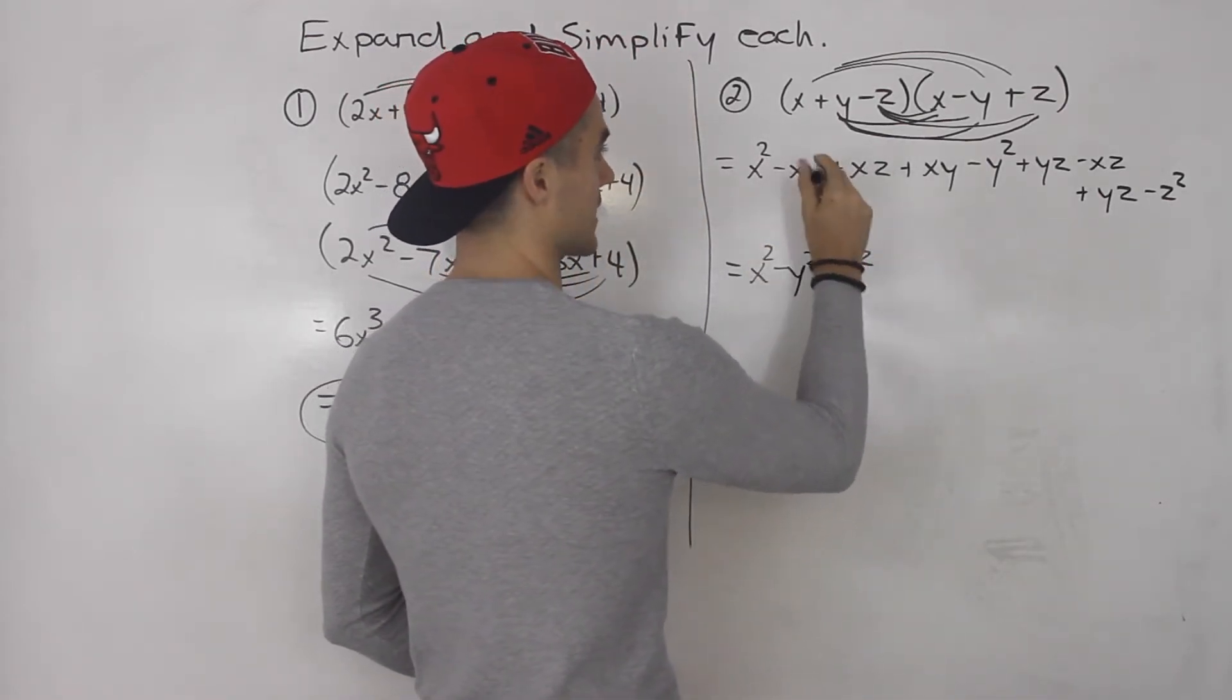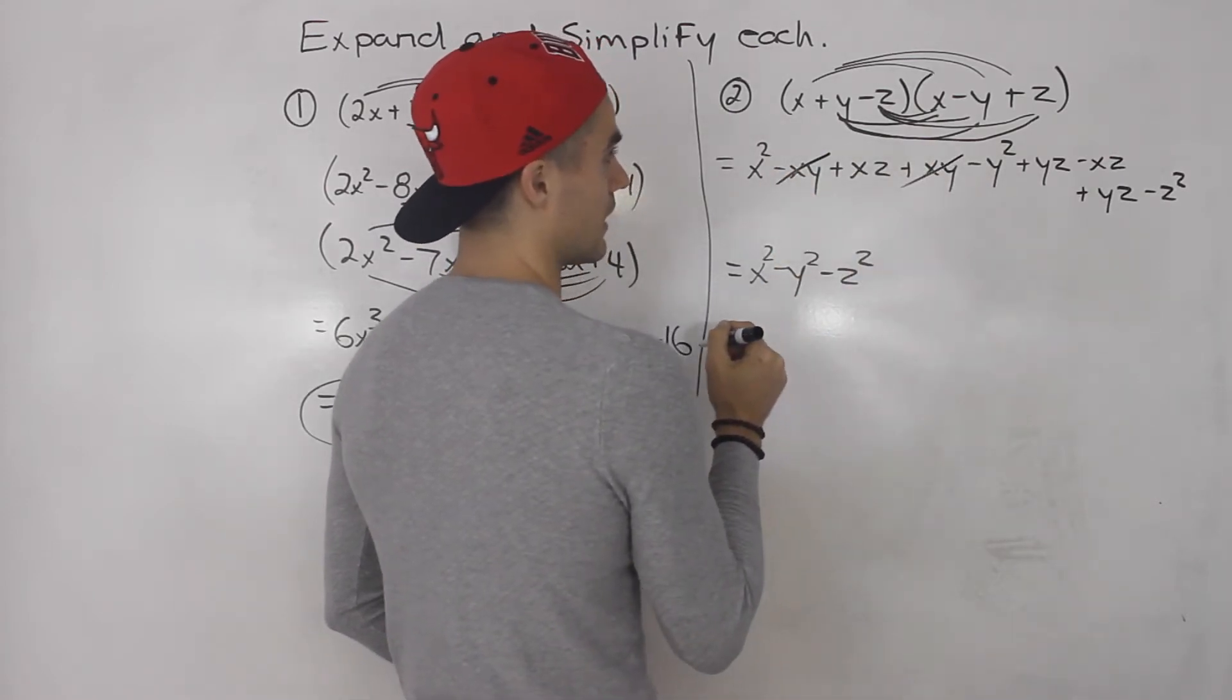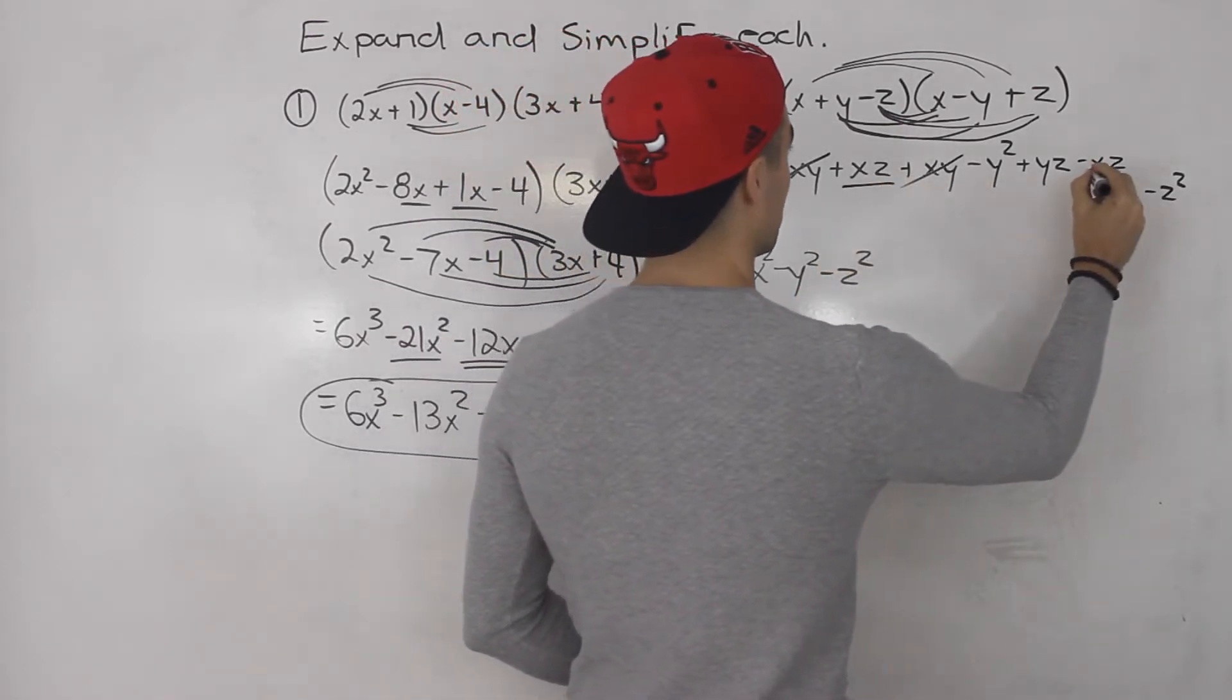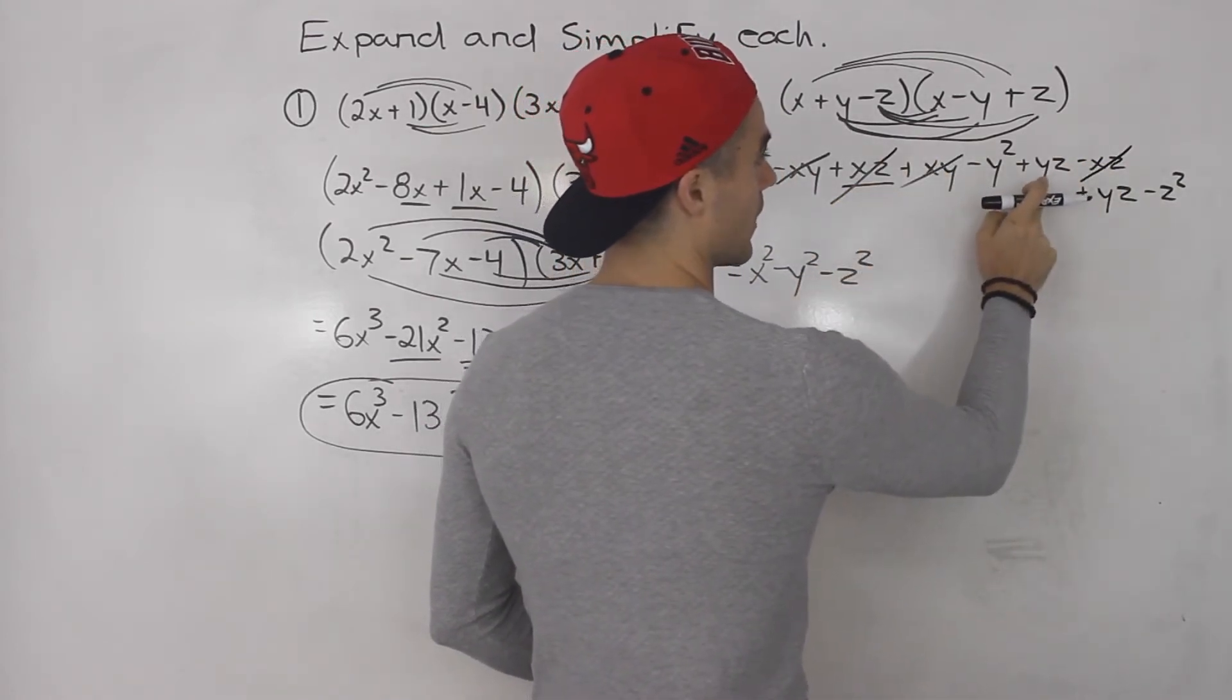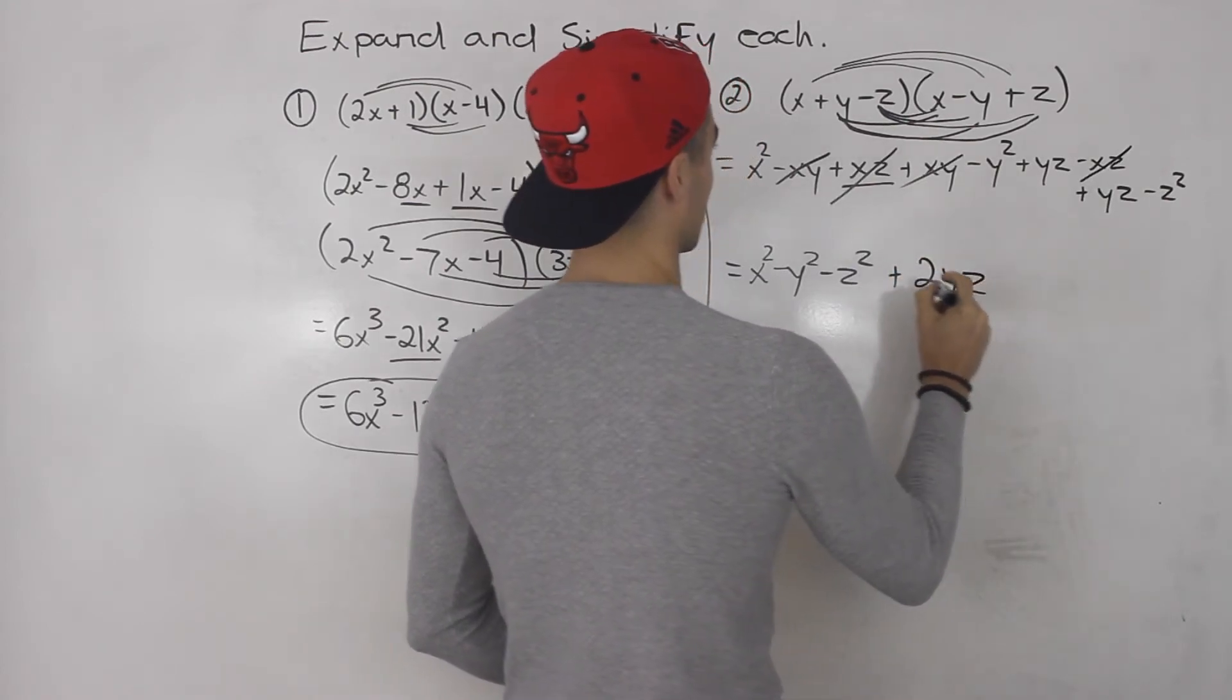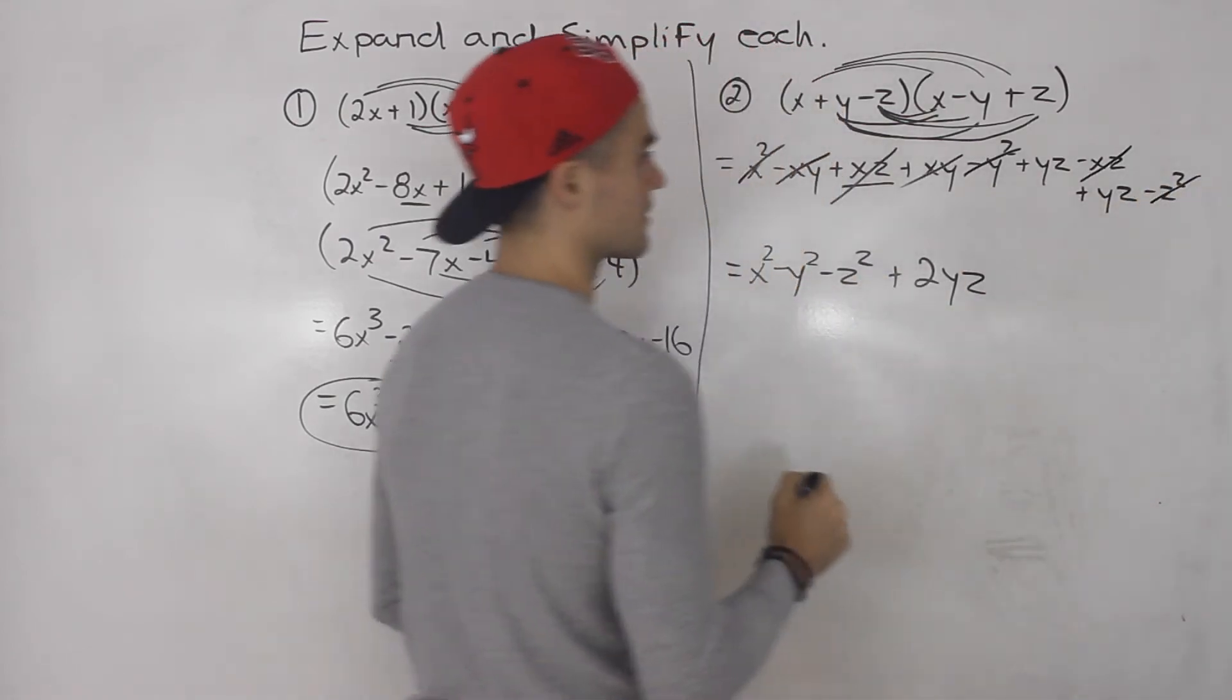Minus xy plus xy. Notice that those two will cancel out. And then we'll have xz minus xz. Those cancel out. And then we got yz plus yz, which gives us two yz.